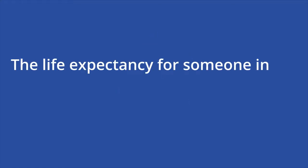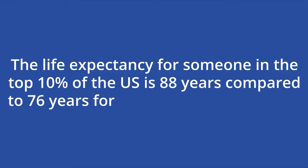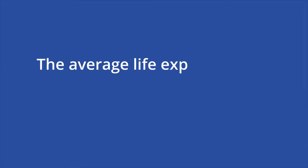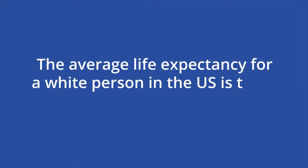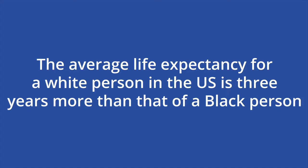These social determinants of health go hand in hand with socioeconomic status and race. The life expectancy for someone in the top 10% of the U.S. is 88 years, compared to 76 years for those in the bottom 10%. Furthermore, the average life expectancy for a white person in the U.S. is three years more than that of a Black person. Income inequality and de facto segregation leads to poorer health outcomes for disadvantaged groups.